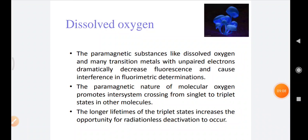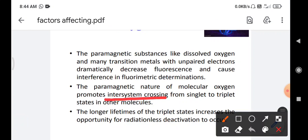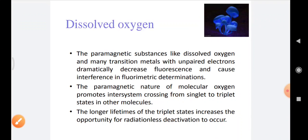The next environmental factor is dissolved oxygen. Paramagnetic substances like dissolved oxygen and many transition metals with unpaired electrons dramatically decrease fluorescence and cause interference in fluorometric determinations. The paramagnetic nature of molecular oxygen promotes inter-system crossing from the singlet to the triplet state in other molecules. The longer lifetimes of triplet states increase the opportunity for radiationless deactivation to occur.